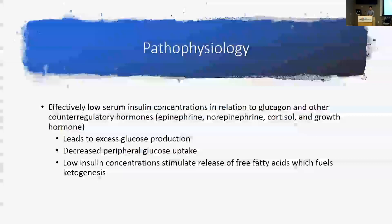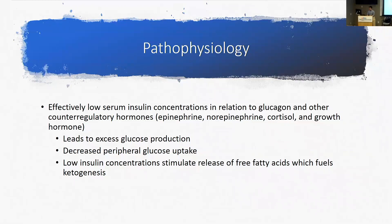Either scenario has essentially the same effect in DKA. With low insulin concentration or responsiveness, you get excess glucose production, decreased peripheral glucose uptake, and low insulin concentrations stimulate release of free fatty acids that fuel ketogenesis. Without insulin, the body doesn't see normal circulating glucose levels and reacts as if in a starvation state, shunting metabolic processes from glucose to breakdown of free fatty acids and proteins.